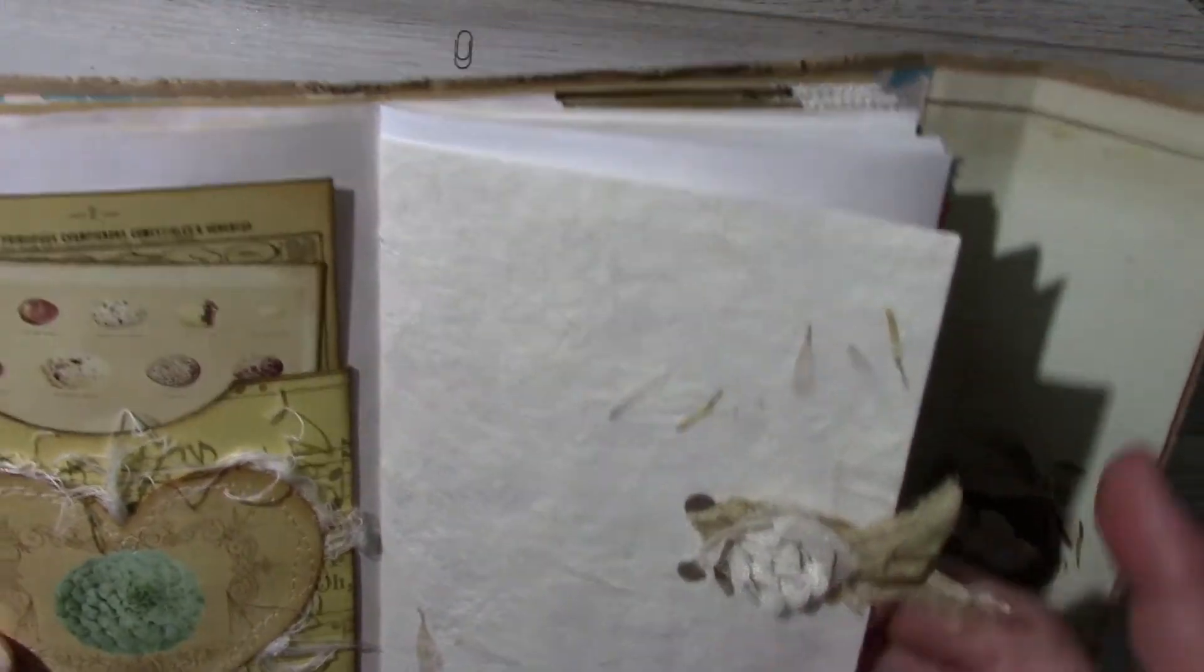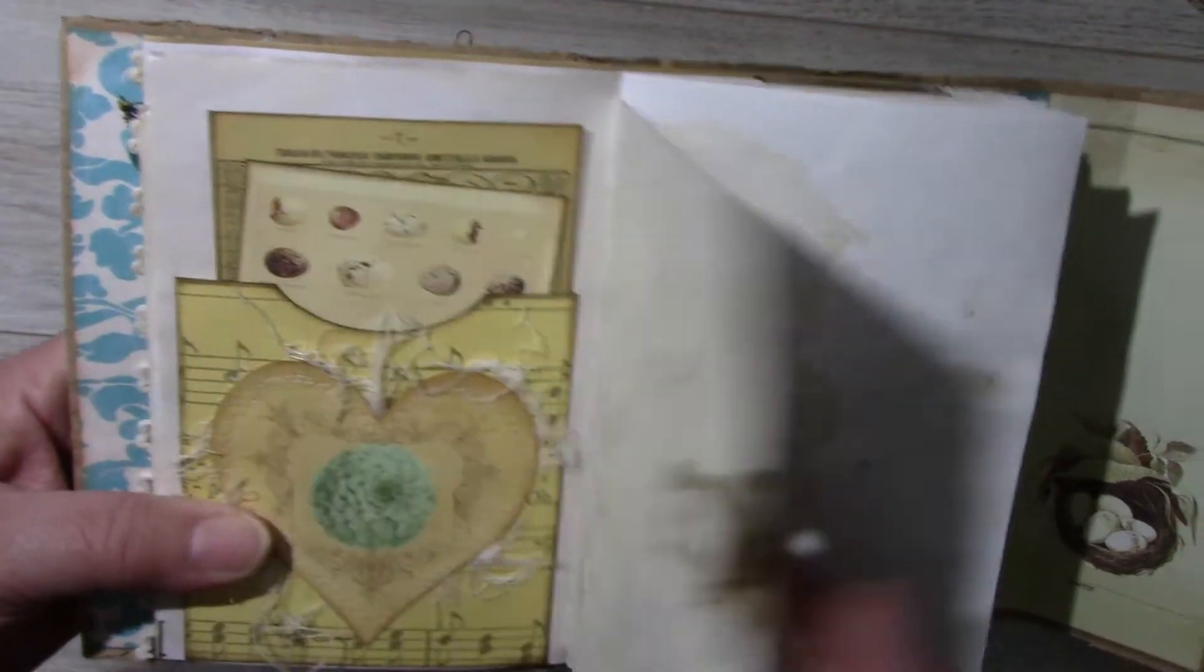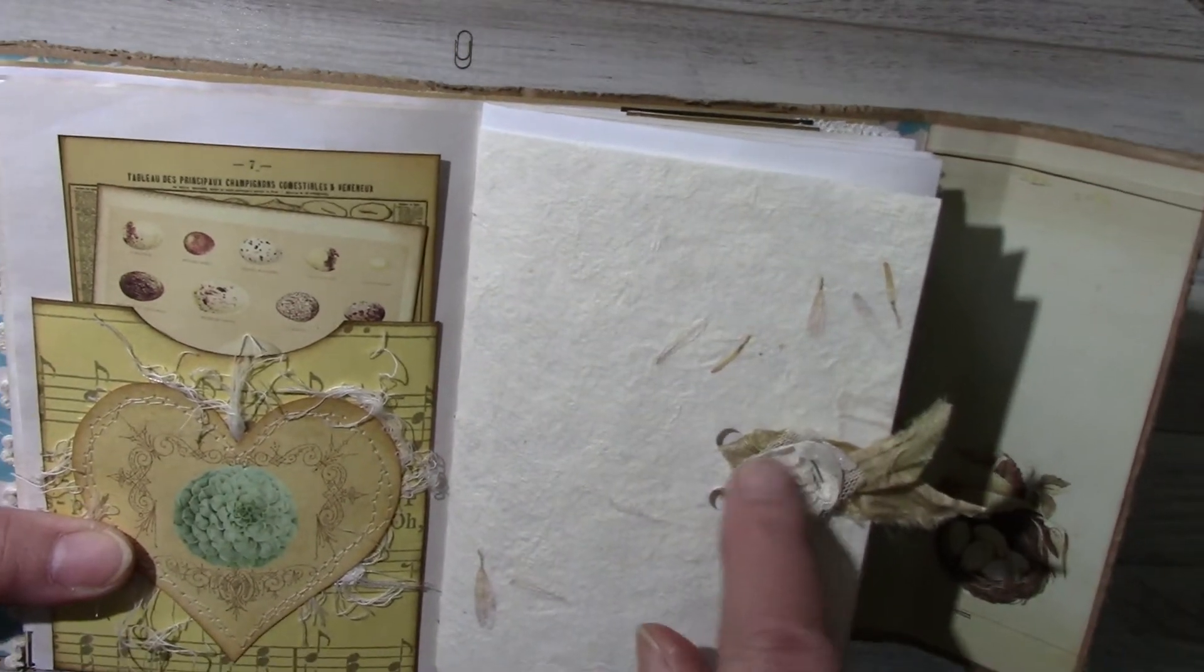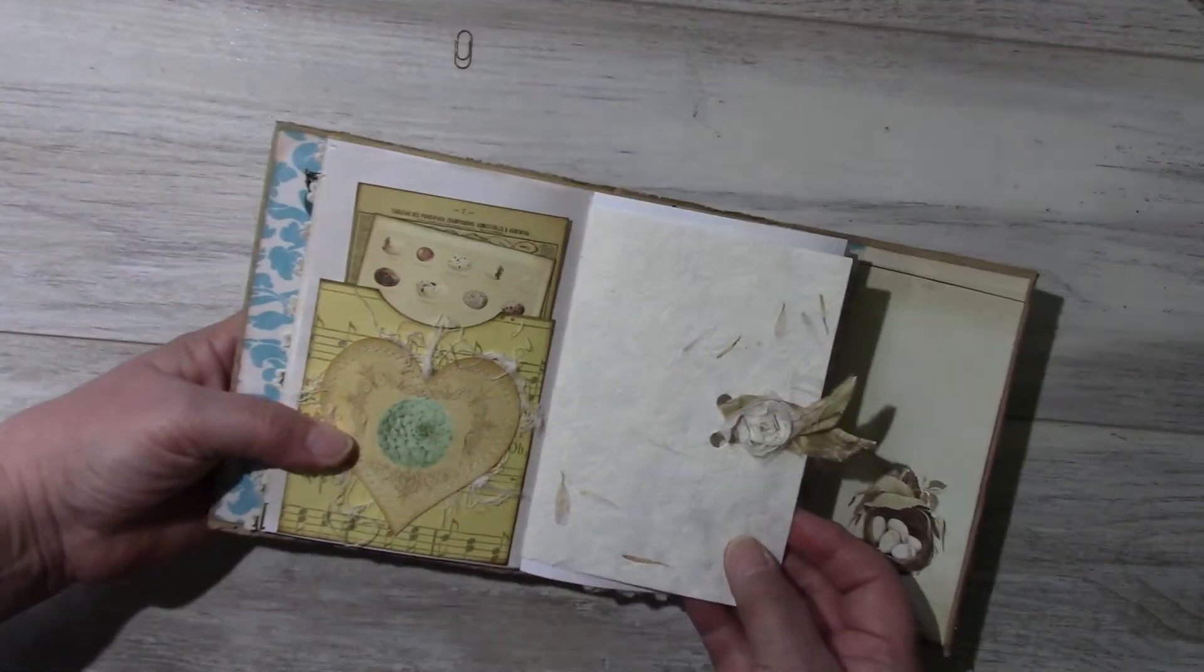It had two holes, it's part of a stationary set, so I put through some sari silk and I stapled a little rosette. Further you'll see the envelope that goes with this paper.